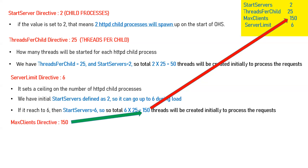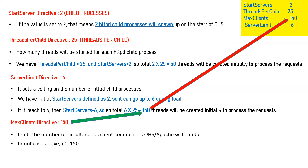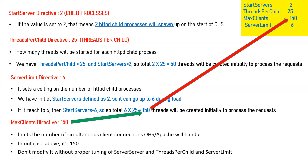MaxClients limits the number of simultaneous connections to the Apache/OHS server — in our case it is 150, meaning OHS can handle 150 simultaneous requests. Do not modify MaxClients without proper tuning of ServerLimit and ThreadsPerChild.